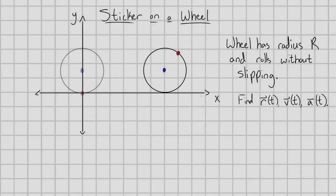Hello there. In this video we have a wheel with radius r that is rolling without slipping, and we have a sticker attached to the wheel — or we can think of this as a pebble that's stuck to the wheel. The point is we're tracking a point on this wheel that's rolling, and we want to find that point's position, velocity, and acceleration as a function of time. This is a really good problem to review kinematics.